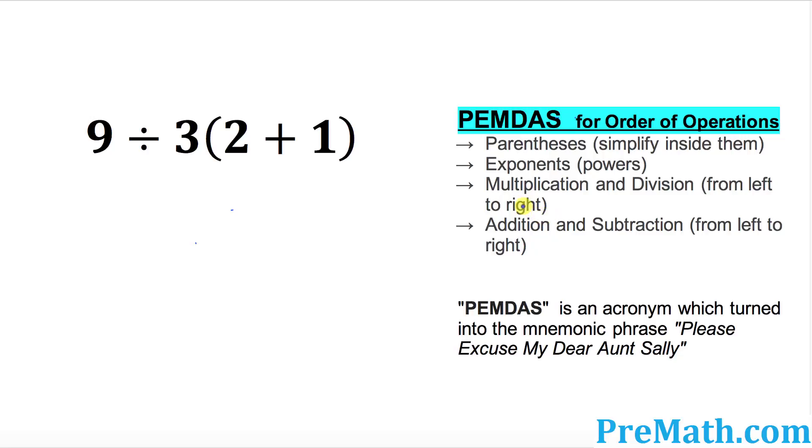Let's go ahead and take care of this problem now. So by these rules, we have to take care of the parentheses first. So whatever inside the parentheses, let's take care of that one. 2 plus 1 is simply what? 3.